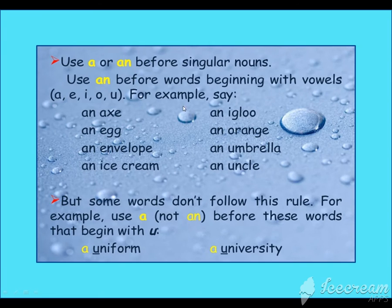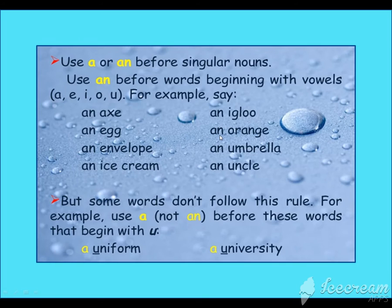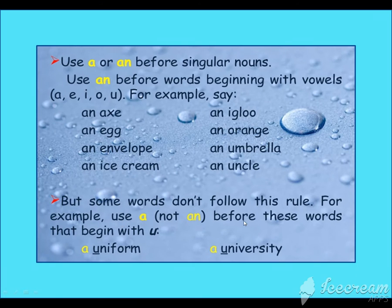Use 'an' before words beginning with vowels: A, E, I, O, U. For example: an axe, an egg, an annual, an ice cream, an orange, an umbrella, an uncle.